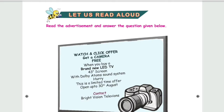Let us read aloud. Read the advertisement and answer the questions given below. Watch and click offer: Get a camera free when you buy a brand new LED TV — 43-inch screen with Dolby Atmos sound system. Hurry, this is a limited time offer, open up to 30th August. Contact Bright Vision Television.